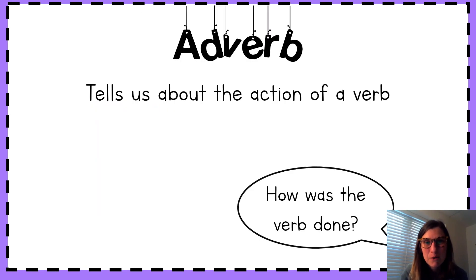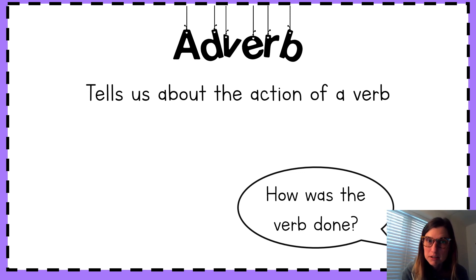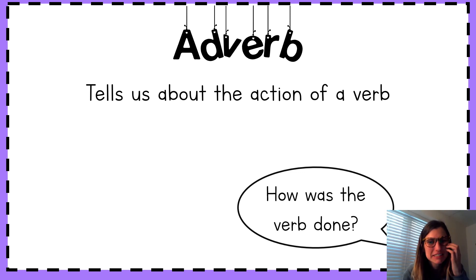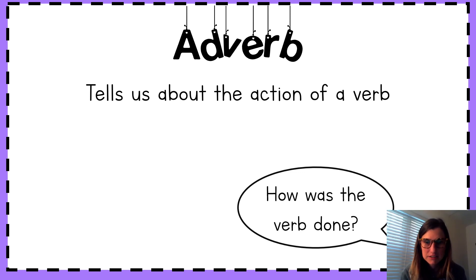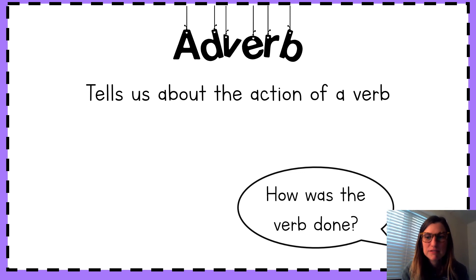So we know an adverb is a word that tells us about the action of a verb, or it tells us how the verb was done. It describes that verb, and it's helpful when we're reading a sentence to ask ourselves, how was this verb done? That will help us find the adverb.